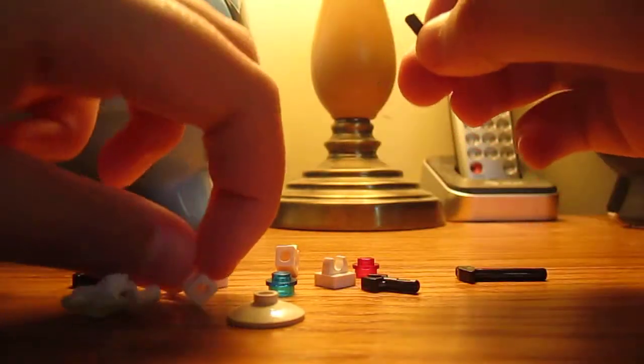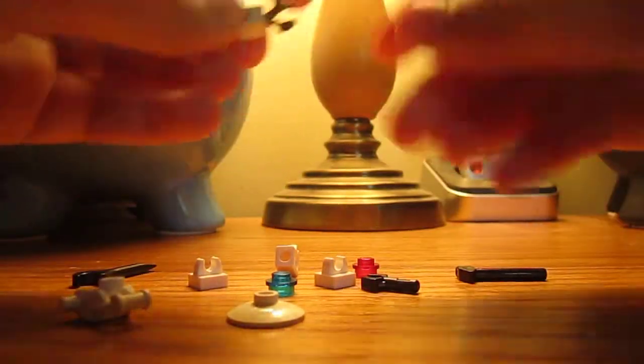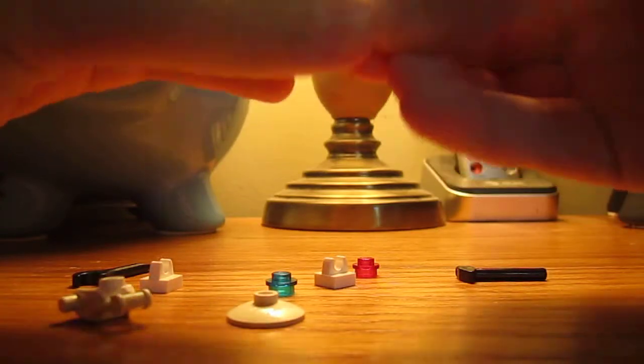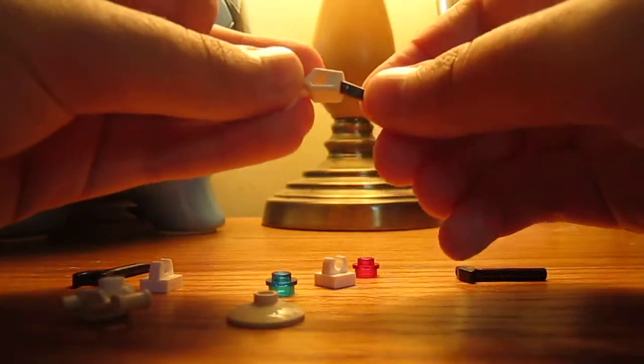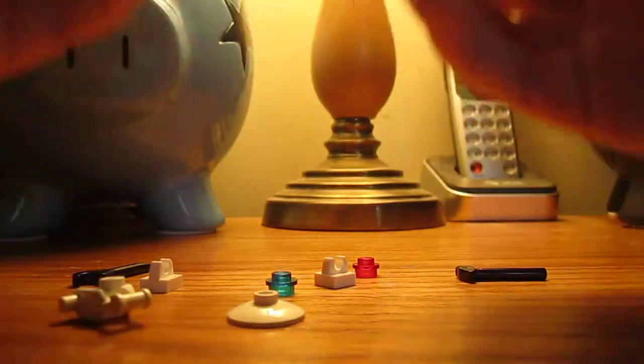Alright, let's get started. First, take your white robot arms and clip them together, clip them with the robot hands, right there, like that. Pretty easy.